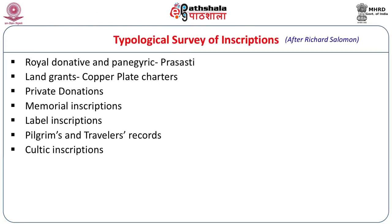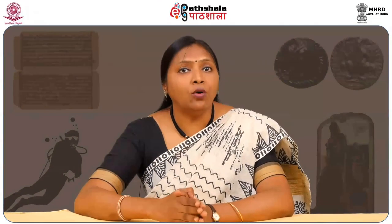Then we have cultic inscriptions, which are religious inscriptions with reference to certain cults. These can be Stotras, the Halayudha Stotra, the Shiva Stotra, or Buddhist Dharanis. All these are known as cultic inscriptions and they are often engraved on temple walls where these Stotras were actually recited, so that pilgrims coming here can also see and recite them.